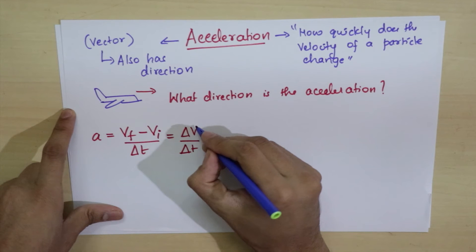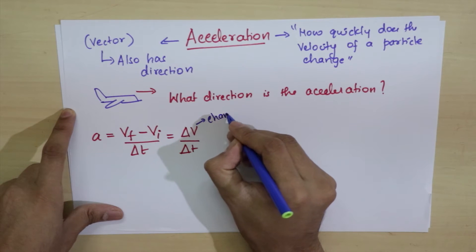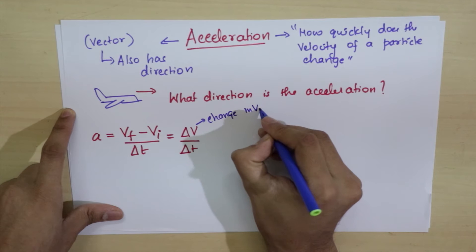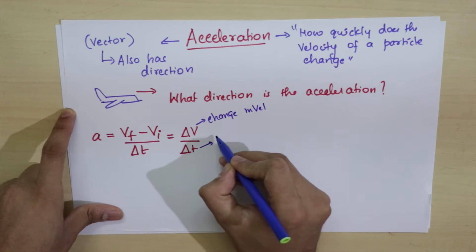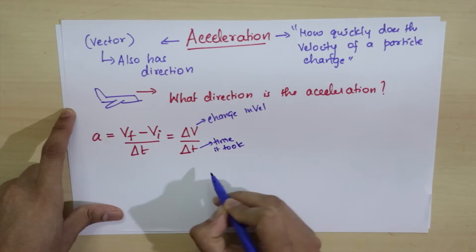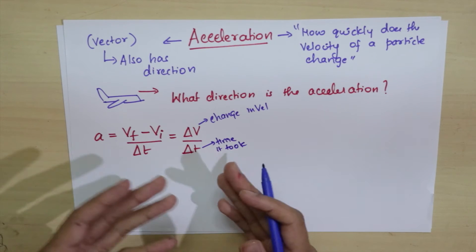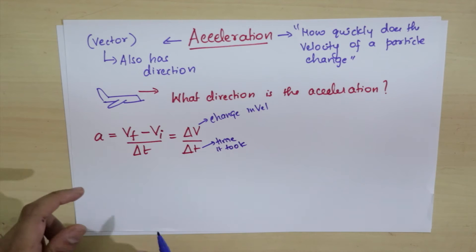And we need to find out how quickly it changes, so you divide it by the time it takes. We write this as delta v divided by delta t. Delta v is the change in velocity, and delta t is the time it took. If the velocity changes faster, acceleration is higher.